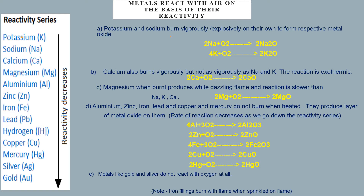When potassium reacts with oxygen, it reacts vigorously. Sodium also reacts vigorously — the reaction is explosive in nature and can take place even at room temperature. Sodium and potassium burn on contact with oxygen at room temperature and produce sodium and potassium oxides respectively. The reaction of calcium with oxygen is also vigorous but not as vigorous as sodium and potassium, and it is exothermic. When magnesium is burnt, it produces a white dazzling flame, but the reaction is slower compared to calcium, sodium, and potassium — you have to provide ignition temperature to it, whereas sodium and potassium react on their own at room temperature.